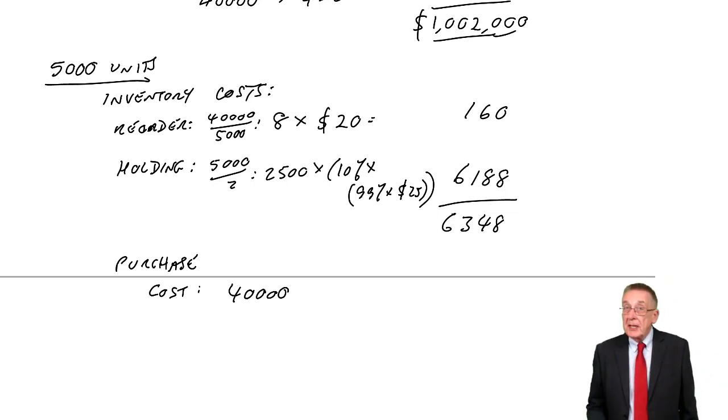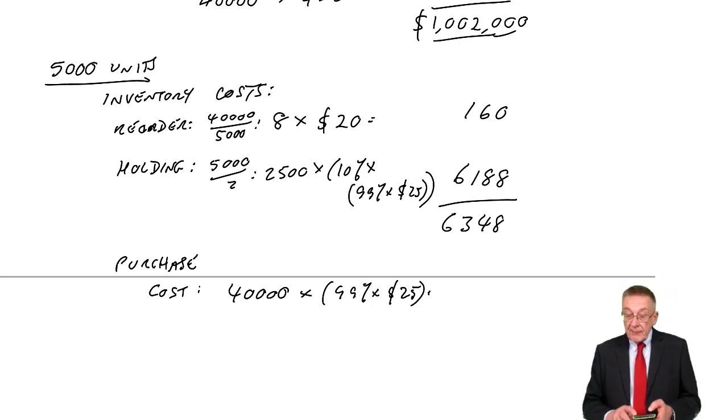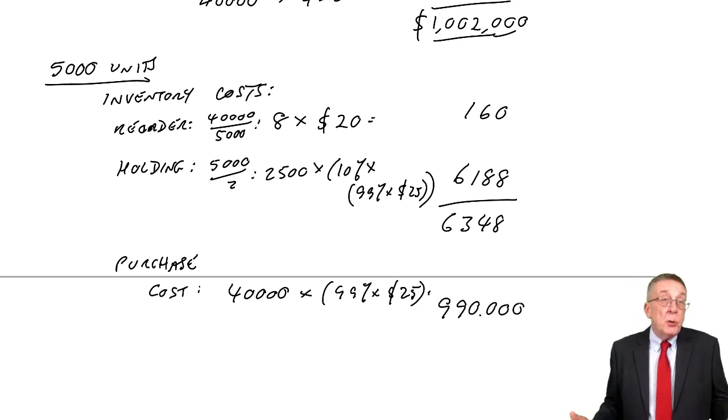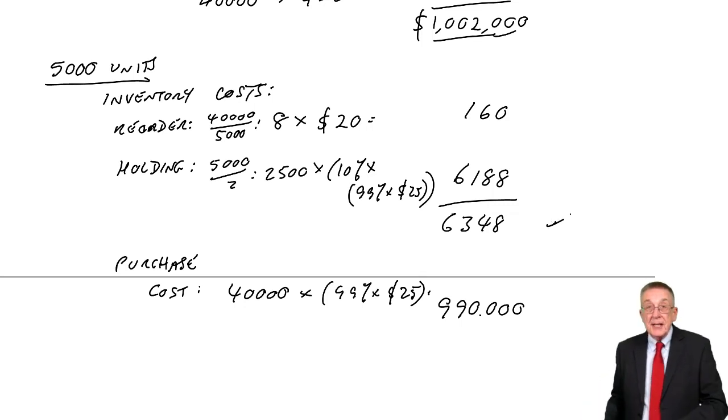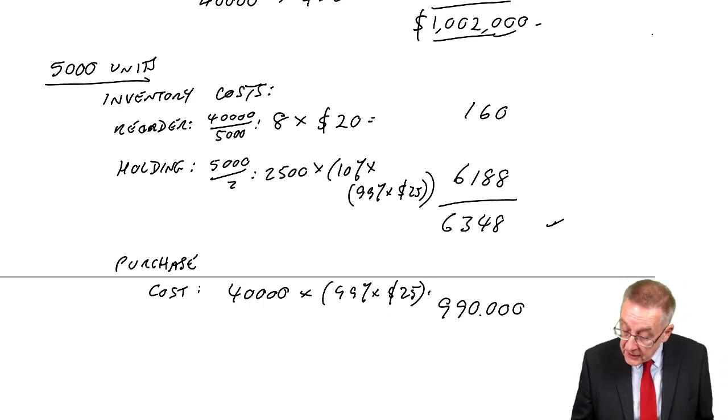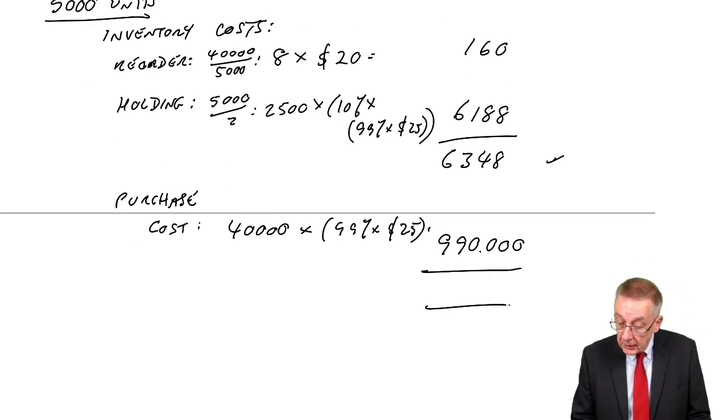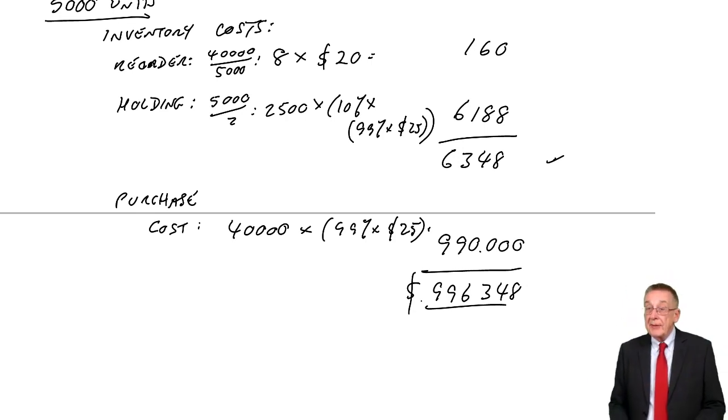But the total purchase cost will be lower. We still need 40,000 units over the year. But instead of paying $25 a unit, again, a 1% discount, the cost per unit will be slightly lower. So what will the total be? I think my arithmetic's right. I get $990,000. Now you could set out your workings differently. That doesn't matter. But although the inventory costs have gone up a lot from $2,000 to $6,348, the total purchase price has gone down a lot from $1 million down to $990,000. And so the total of the two, $996,348. It would be better to order 5,000 units. The discount is bigger than the extra inventory costs.